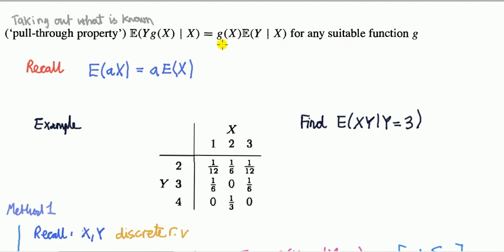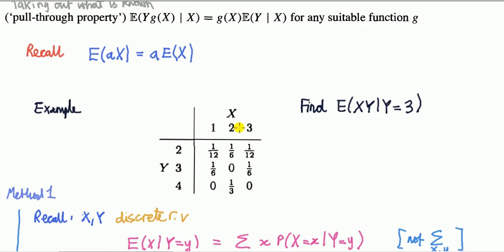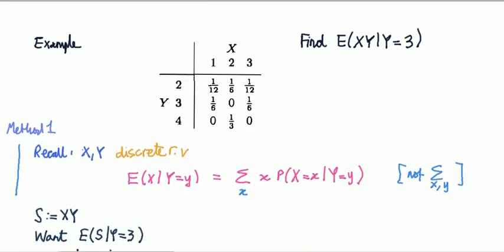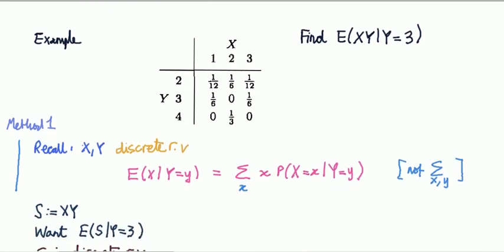We can set aside the details of what G needs to be — just a suitable function. Let's look at a concrete example. Say we have two discrete random variables with a given joint mass function, and we want to find the expected value of the product XY given that Y equals three.